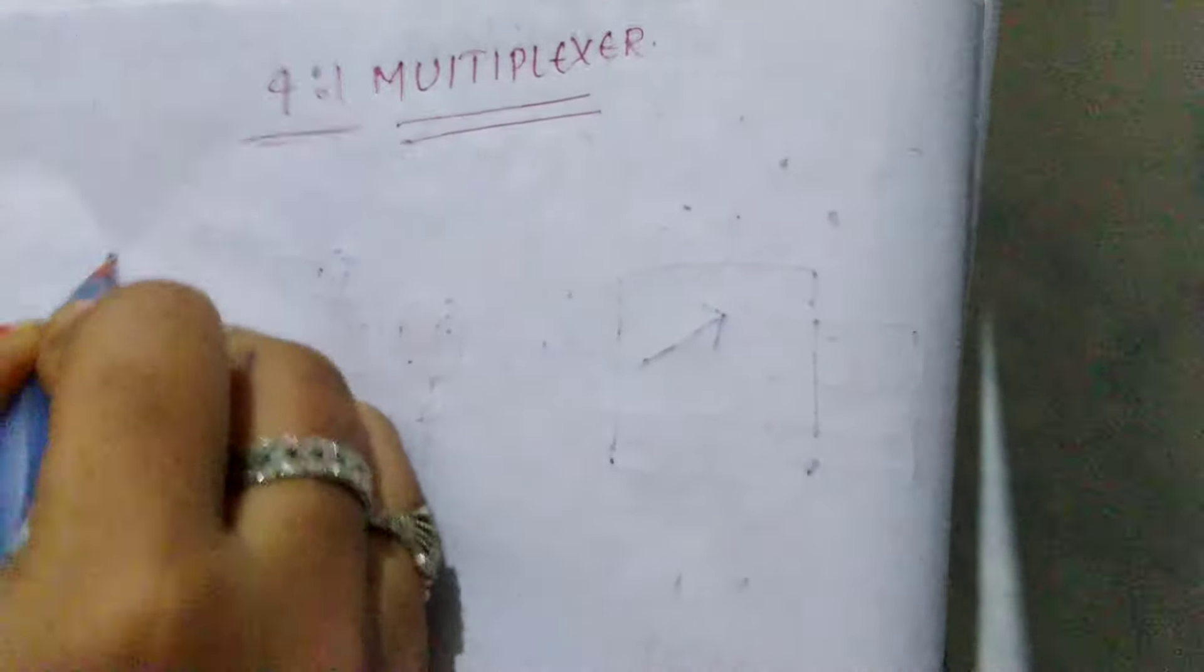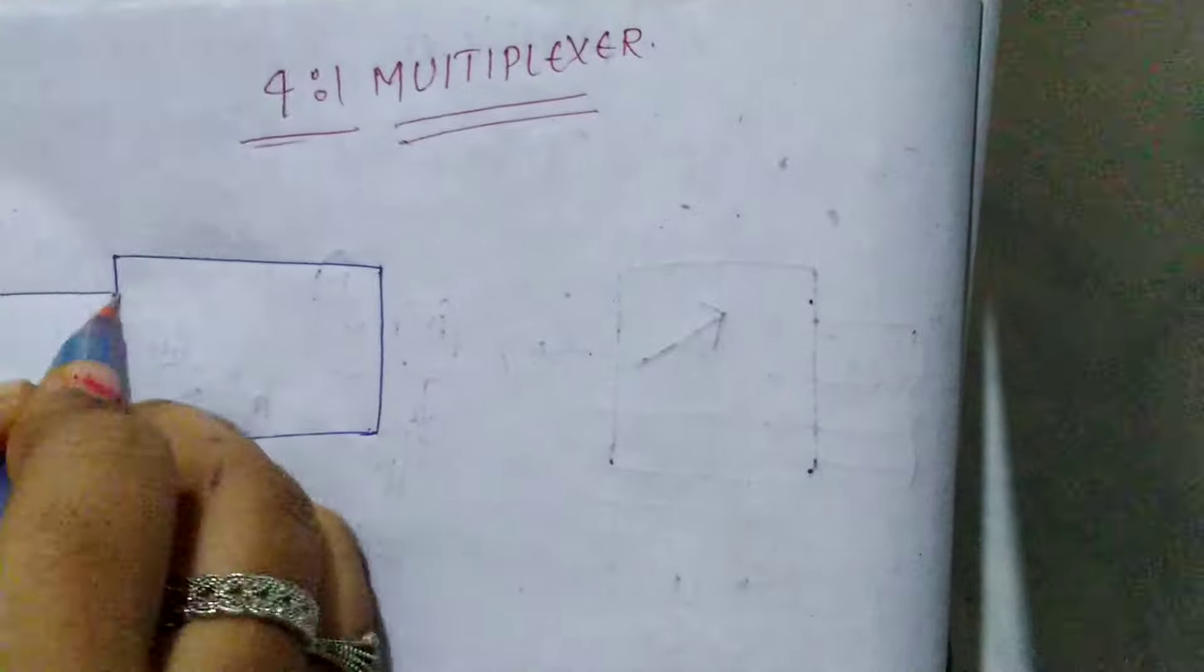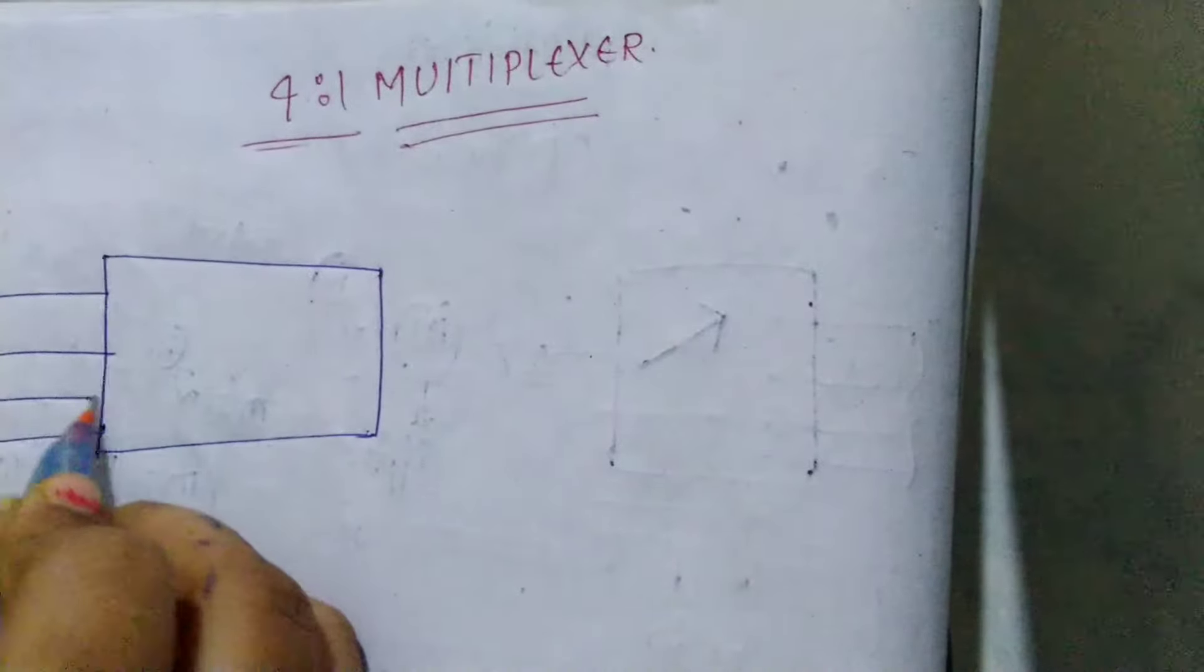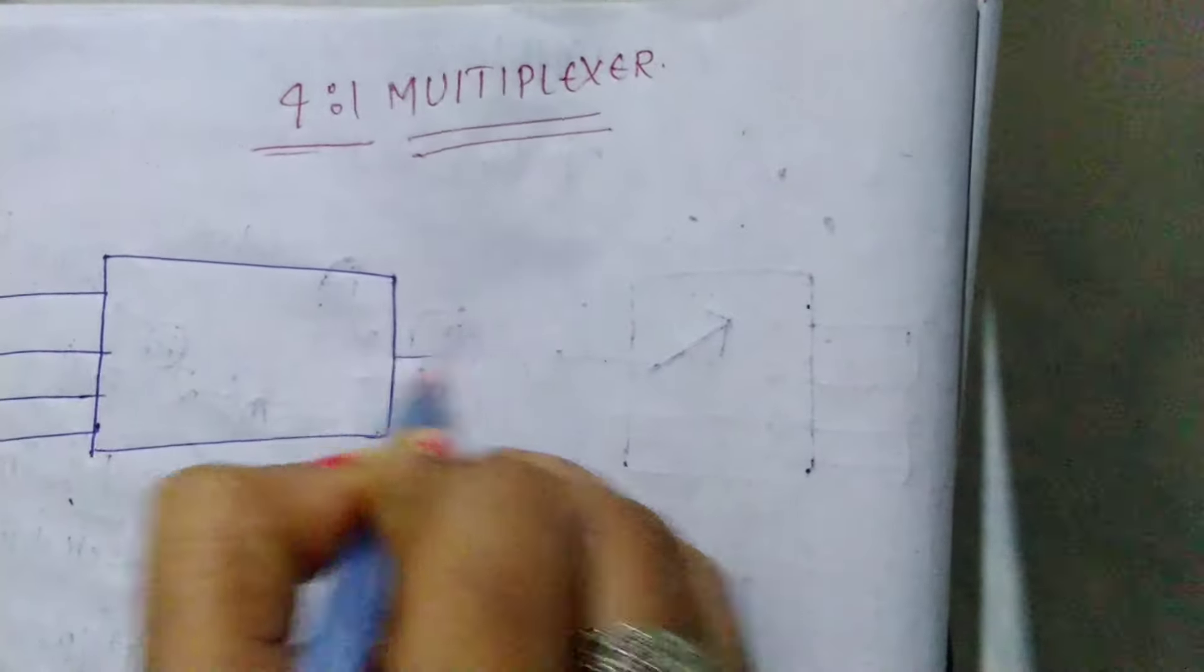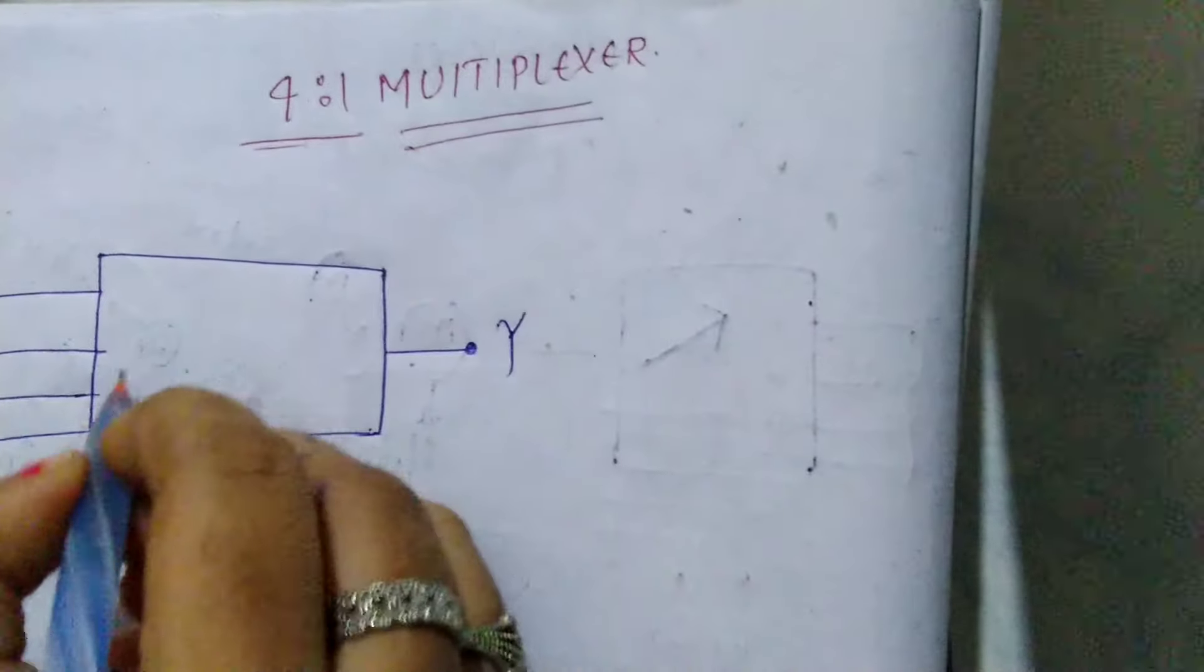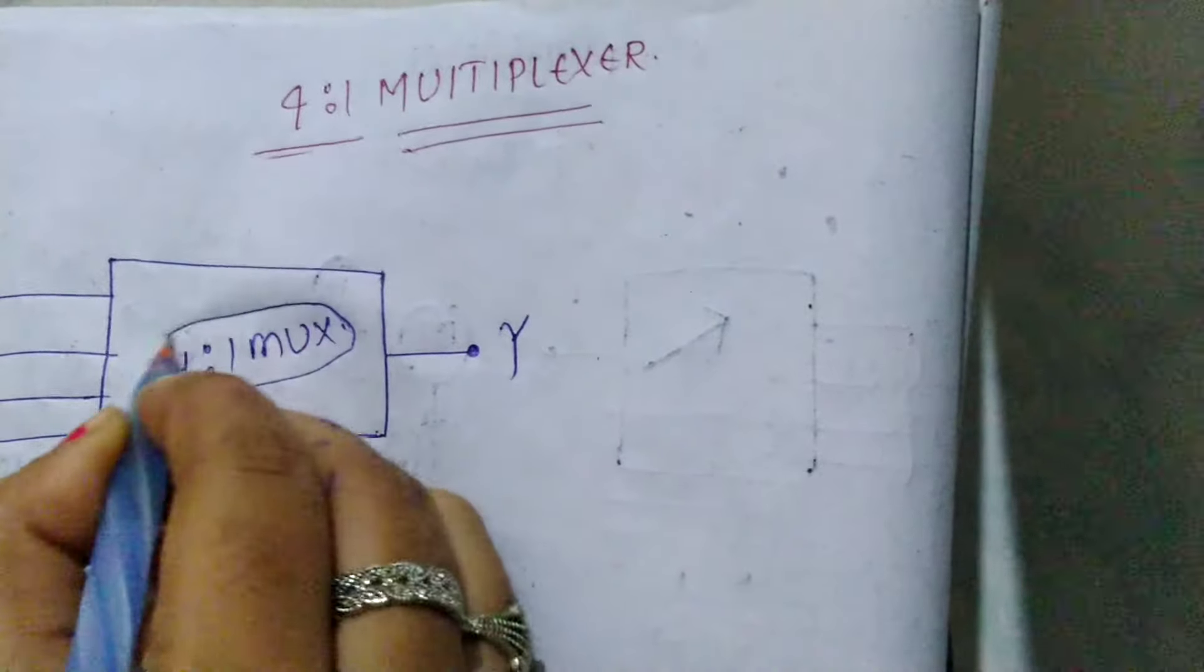In a 4 to 1 multiplexer, we have 4 number of inputs and single number of output. Let us consider inputs D0, D1, D2, and D3 and output Y. This is a 4 to 1 mux. Multiplexer is also called as mux.